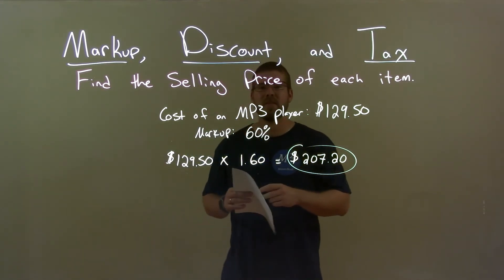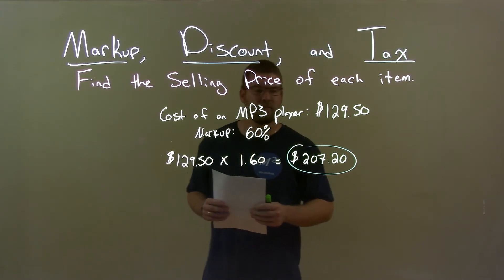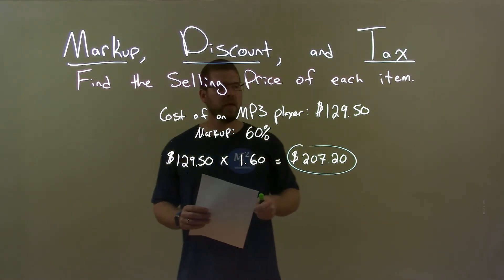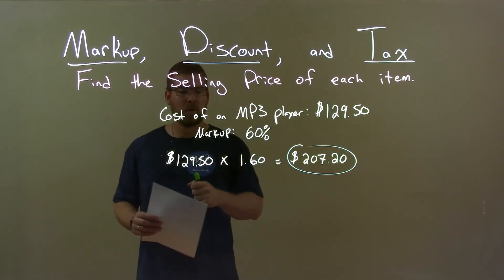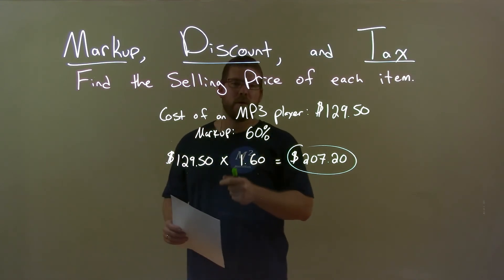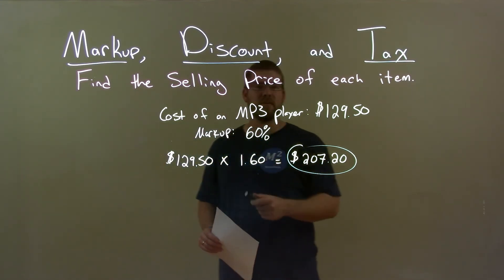Quick recap. We're given the cost of an MP3 player is $129.50, and the markup is 60%. We take the cost, $129.50, multiply it by 1.60, and got our final answer of $207.20. That makes sense.